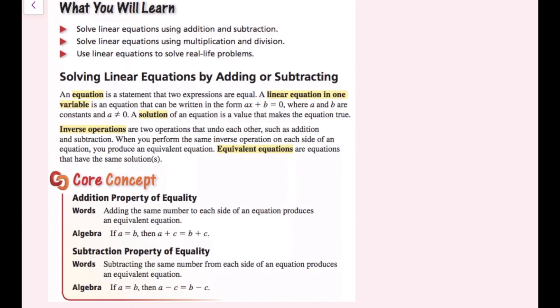Inverse operations are two operations that undo each other, such as addition and subtraction, multiplication, division, radicals, and exponents. When you perform the same inverse operation on each side of an equation, you produce an equivalent equation, and in an equivalent equation, the same solutions occur.